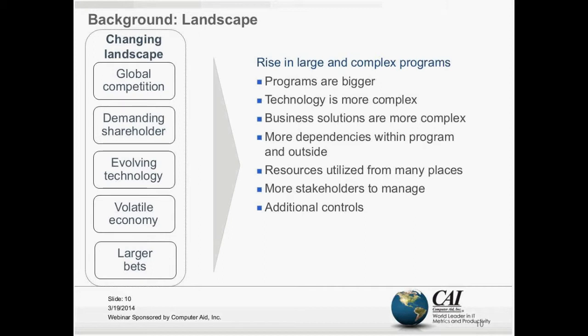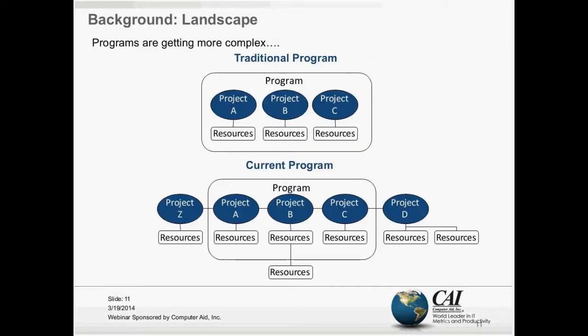Here's a visual representation of what that might look like. In a traditional program, the program is pretty insulated — it has a bunch of projects and resources that report up to the project manager, and they live in their bubble. In today's landscape, it looks much more like the picture on the bottom, where some things are contained within the program, but there are dependencies on projects outside the program, dependencies on resources outside the program, and resources are partially allocated to different programs with different focus. Programs today look much more like that second picture.